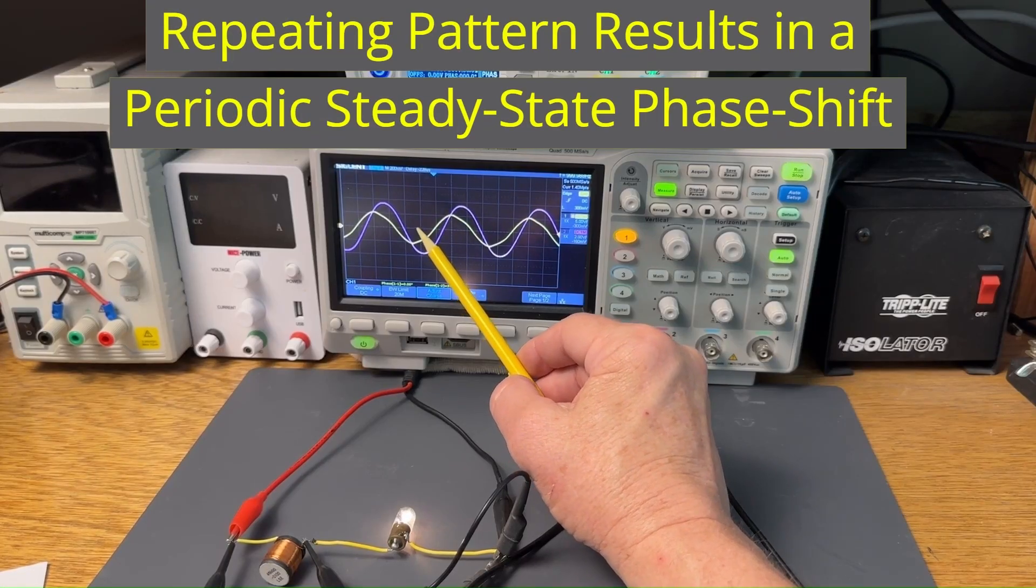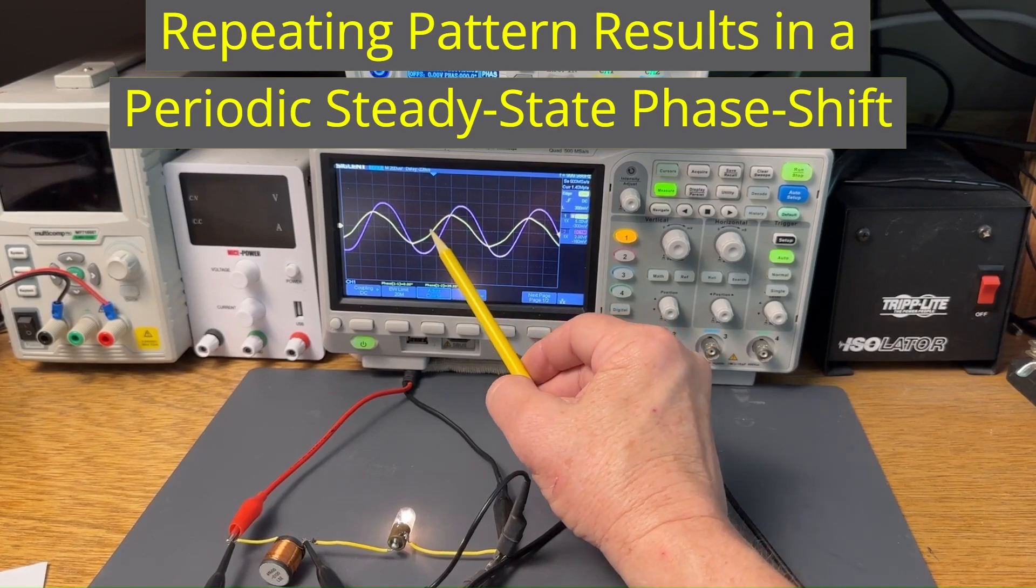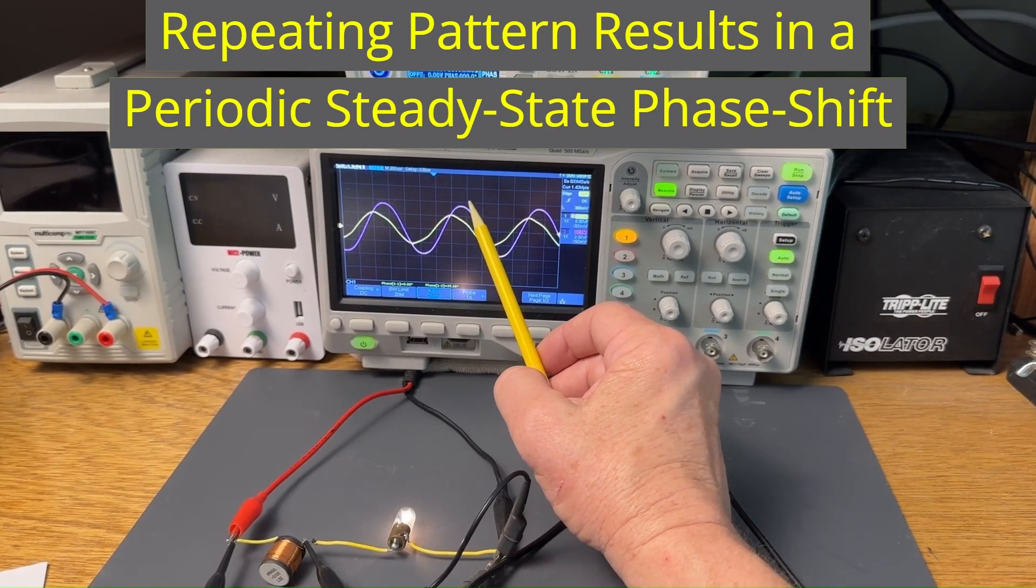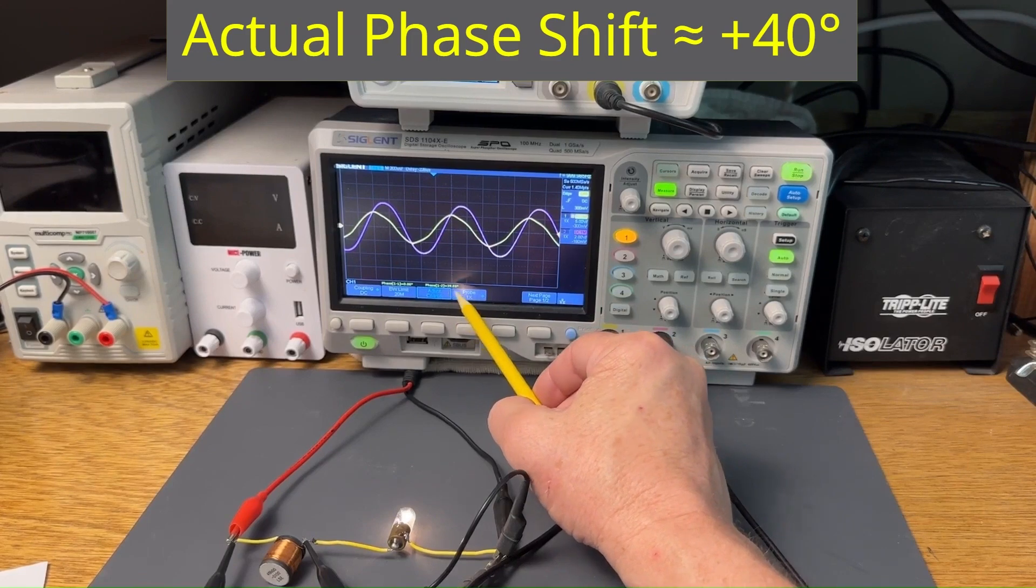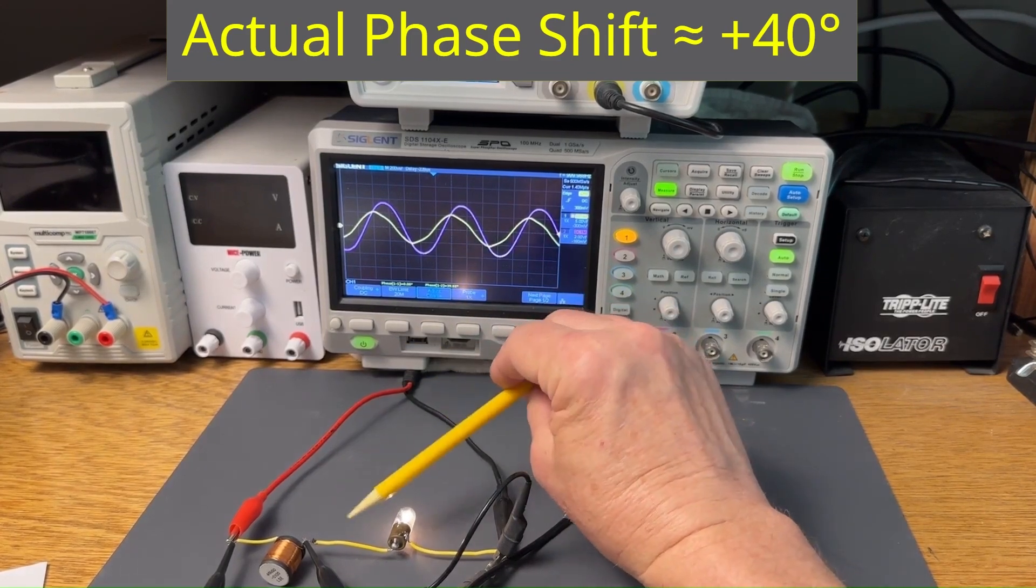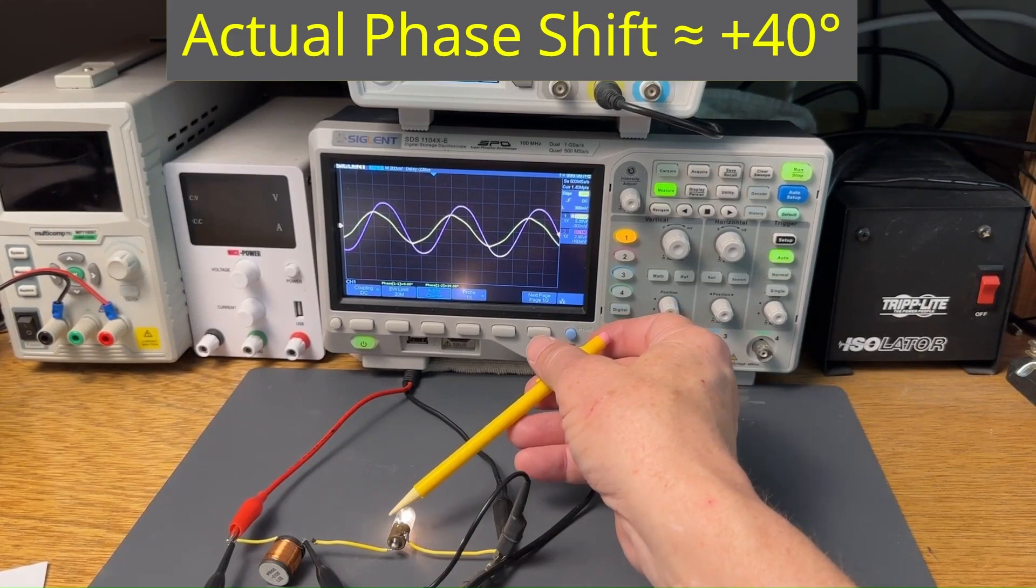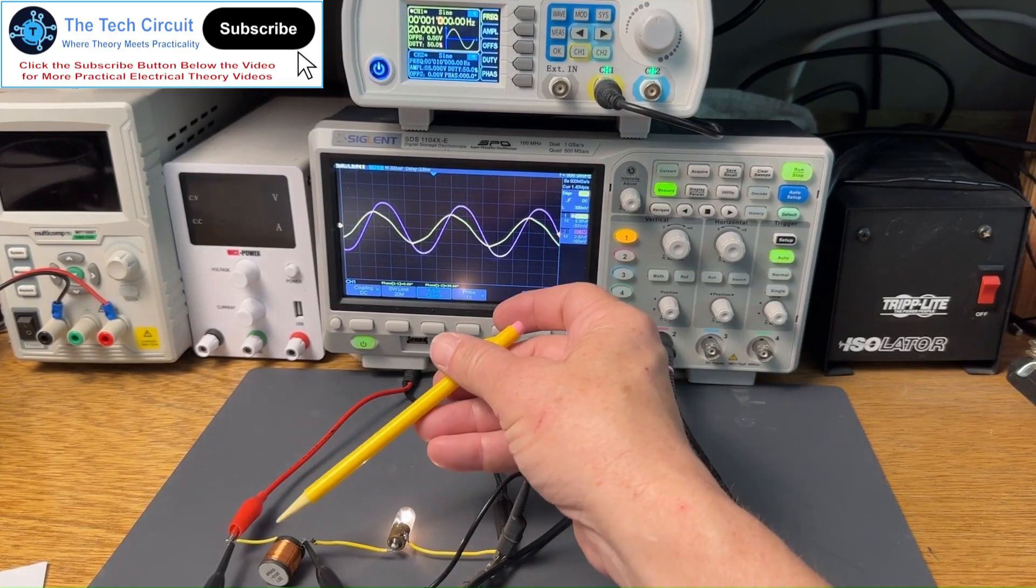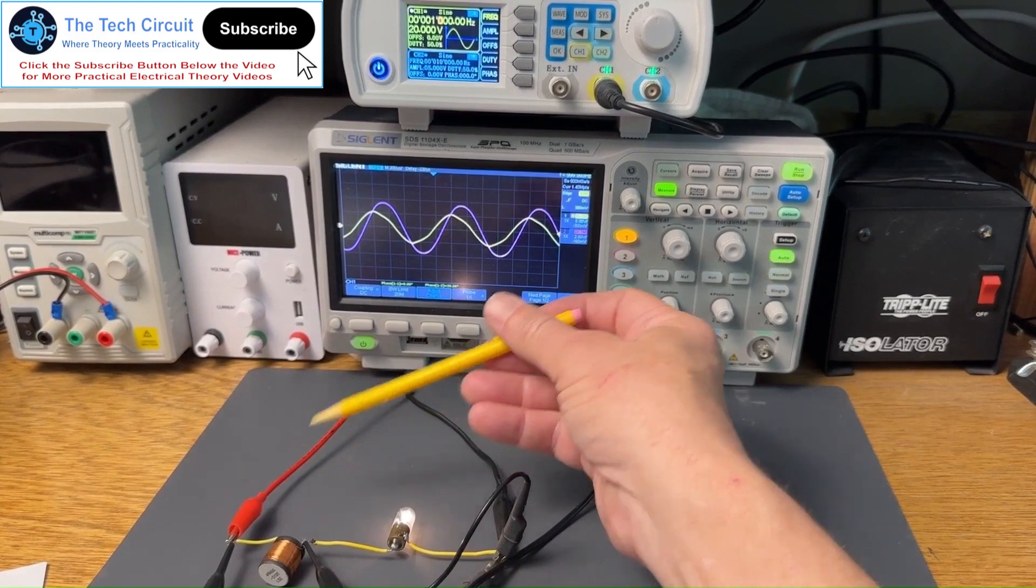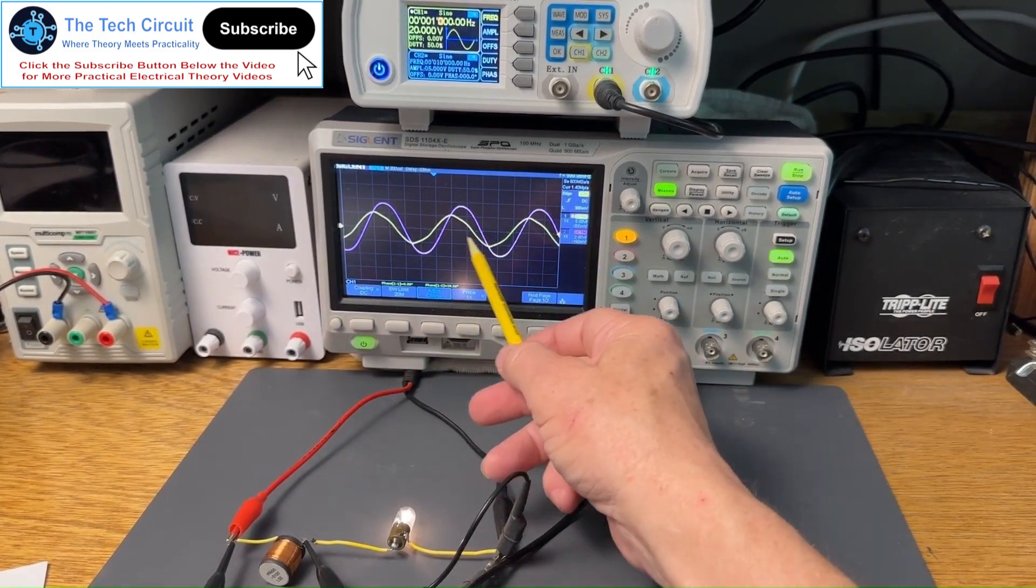This repeating pattern creates a periodic steady state phase shift between the voltage and the current. In this case, the shift is about 40 degrees. Without the resistive light bulb, it would be a full 90 degrees. But because the bulb adds a resistive load that sheds energy as heat instead of sending it back like the inductor, the phase shift is reduced to something less than 90 degrees.